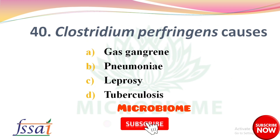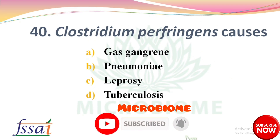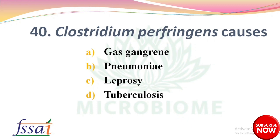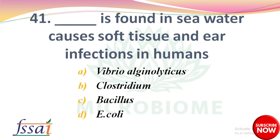Next: Clostridium perfringens causes — options: gas gangrene, pneumonia, leprosy, tuberculosis. The right answer is option A, gas gangrene. Next: Dash is found in seawater and causes soft tissue and ear infections in humans — options: Vibrio alginolyticus, Clostridium, Bacillus, Escherichia coli. The right answer is option A, Vibrio alginolyticus.